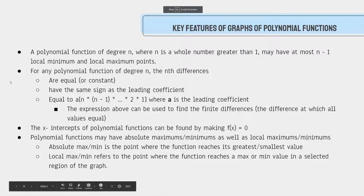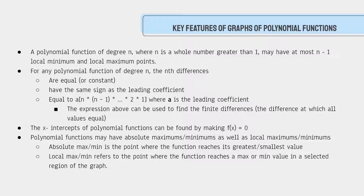For any polynomial function of degree n, the n-th differences are equal and constant, have the same sign as the leading coefficient, and are equal to a times n factorial, where a is the leading coefficient. You could use this expression to find the finite differences, which is the difference at which values are all equal.